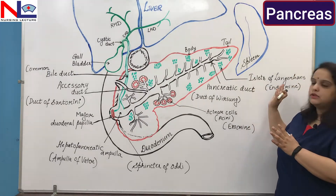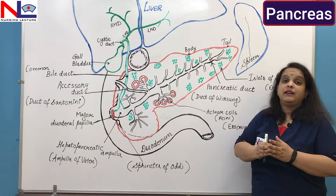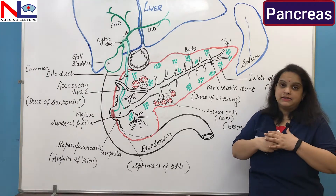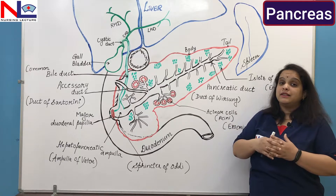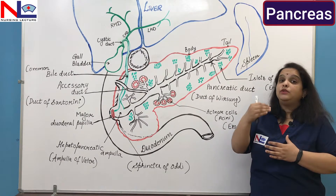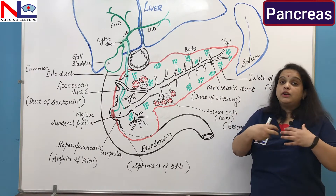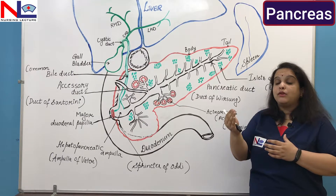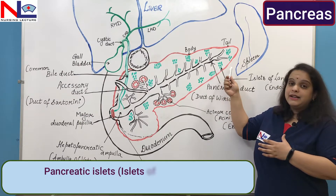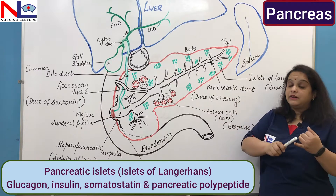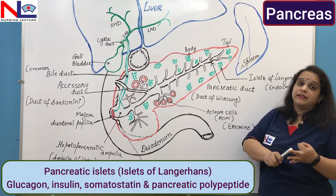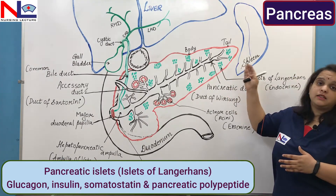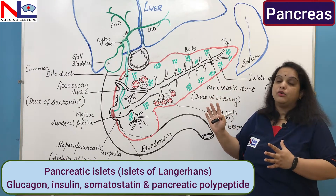Playing an endocrine function, these cells release certain hormones, most importantly insulin. Insulin utilizes glucose in our body cells and thereby controls blood sugar levels. If the pancreas fails to produce insulin, glucose will not be utilized by the cells and blood sugar levels remain high, which may cause diabetes. The islets of Langerhans release hormones including glucagon, insulin, somatostatin, and pancreatic polypeptide — all of which will be discussed in the endocrine function section. These islets release hormones directly into the bloodstream, acting as an endocrine gland.